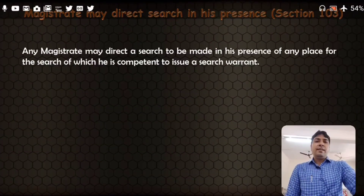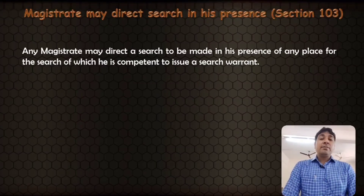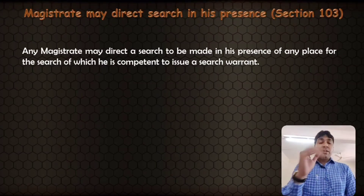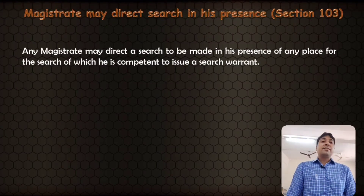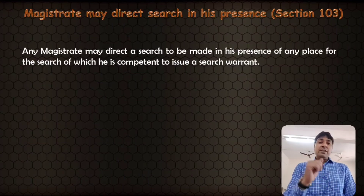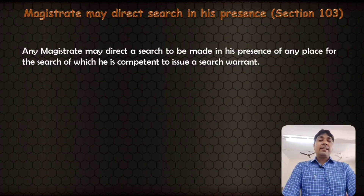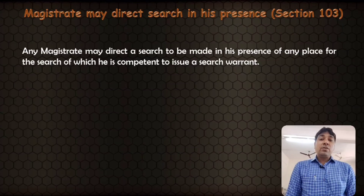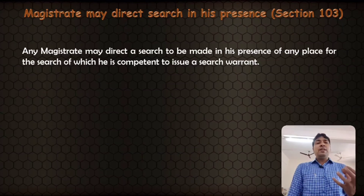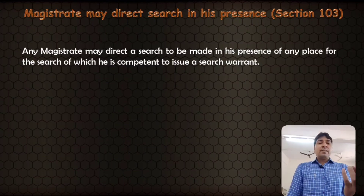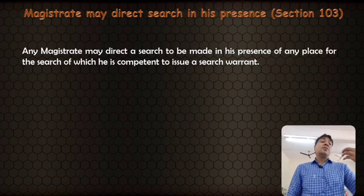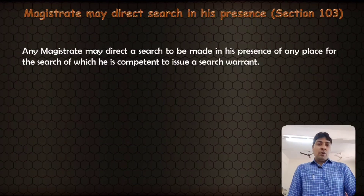Section 103 — magistrate may direct search in his presence. Any magistrate may direct a search to be made in his presence of any place for the search of which he is competent to issue a search warrant. The magistrate can issue a search warrant and specify that the search of the premises be conducted only in his presence.